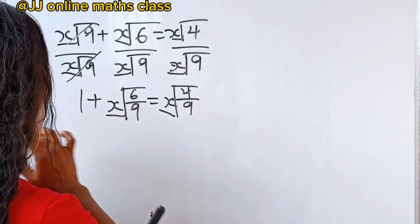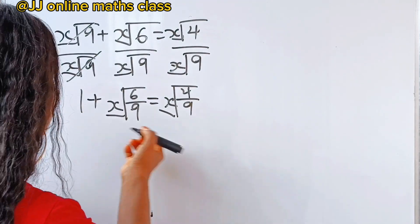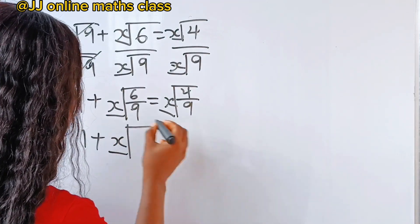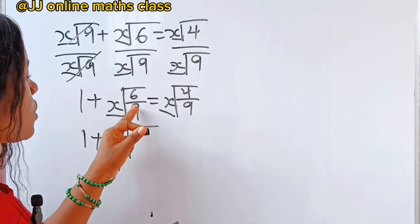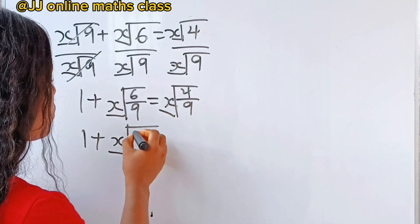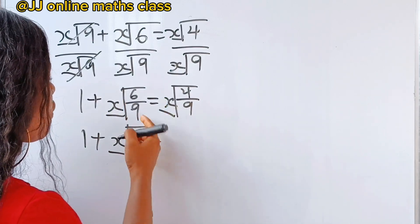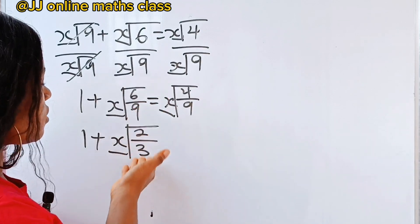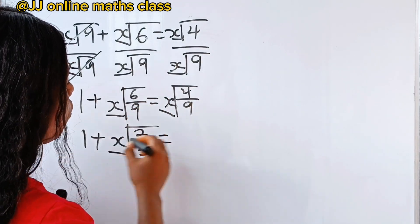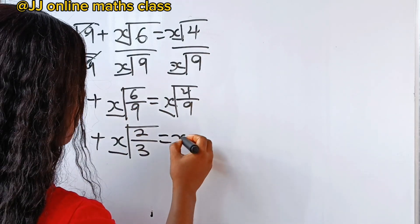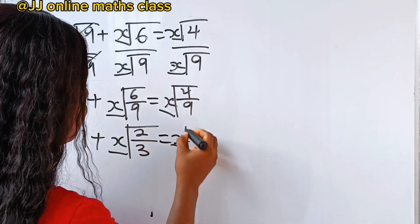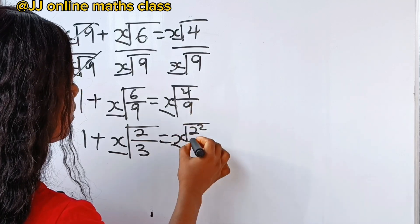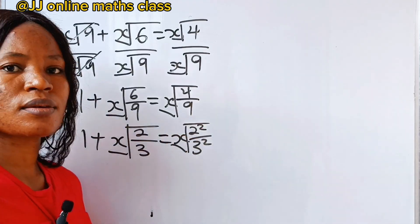Now we have 1 plus x-root of, in its lowest term — when 3 divides 6 you have 2, and dividing 9 you have 3 — so this is equal to x-root of 4, which is the same as 2 squared, and 9 is the same as 3 squared.